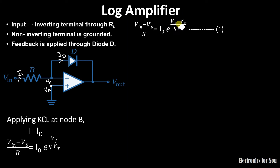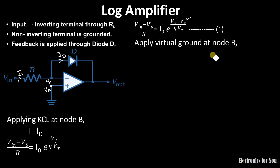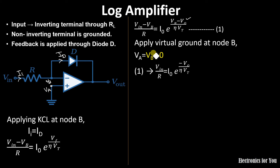To find the expression for output voltage V_o, we use the virtual ground concept for the inverting configuration, which gives V_a = V_b = 0. Substituting V_b = 0 into our equation: V_in / R = I_0 · e^(−V_o / η·V_T). We need to solve this for the output voltage V_o.